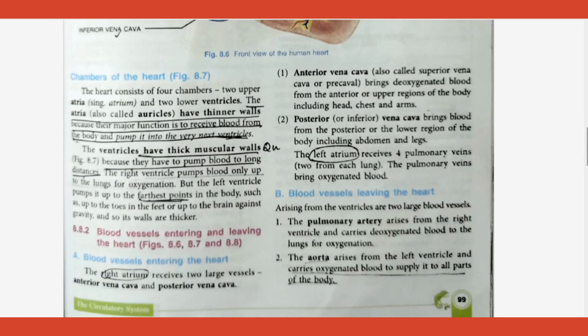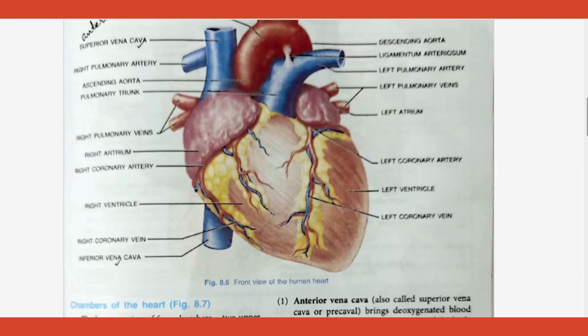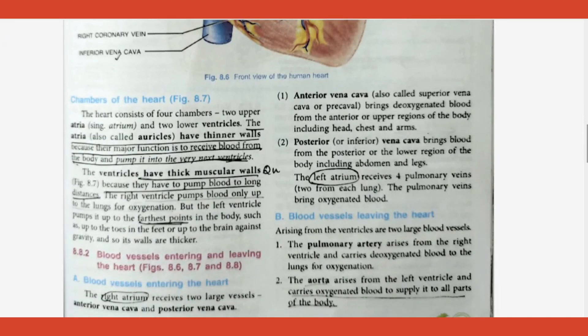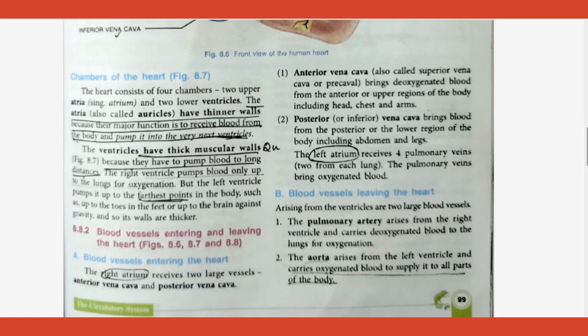We have already learned the chambers of the heart. Now there are certain questions that are repeatedly asked. Why is the wall of the auricles thinner compared to the ventricles? The answer is that ventricles function to pump blood into long distances — to far away places — and that is the reason their walls are thicker.